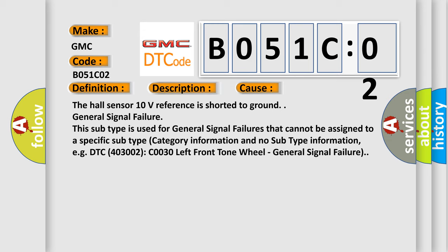This subtype is used for general signal failures that cannot be assigned to a specific subtype category information and no subtype information. For example, DTC 400 and 3002 C0030 left front tone wheel, general signal failure.